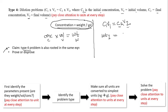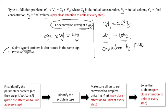On the other side, C2 times V2 gives you weight two. This tells you it is a conservation of mass — weight before equals weight after. The weight of the solution is not changing; it's just the volume and concentration that are changing.